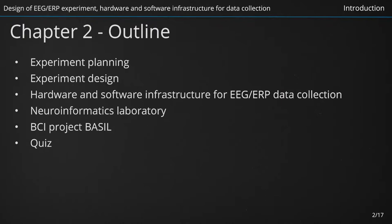Having introduced our current position in the EEG data life cycle, we can now present an outline of the second part of our tutorial. At first, we describe what is happening in experiment planning and design phases. Then, we will familiarize with the hardware and software infrastructure for collection of EEG and ERP data, the neuroinformatics laboratory at the University of West Bohemia, and specific hardware devices and software tools used there. Then, we will present experimental design of the brain-computer interface project BASIL and give you an opportunity to take a short quiz.